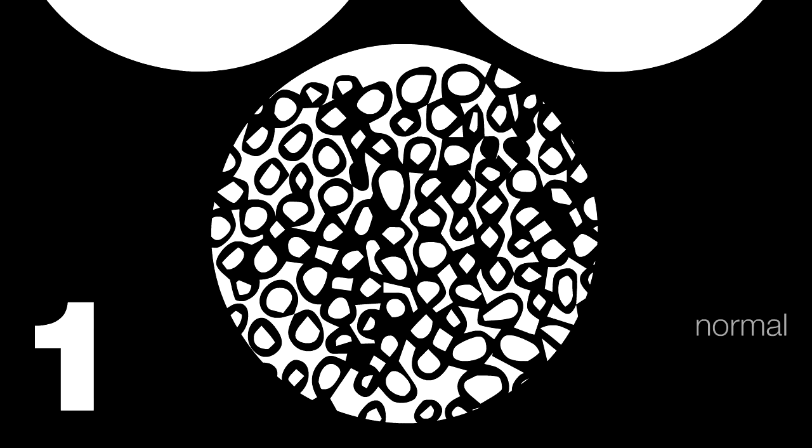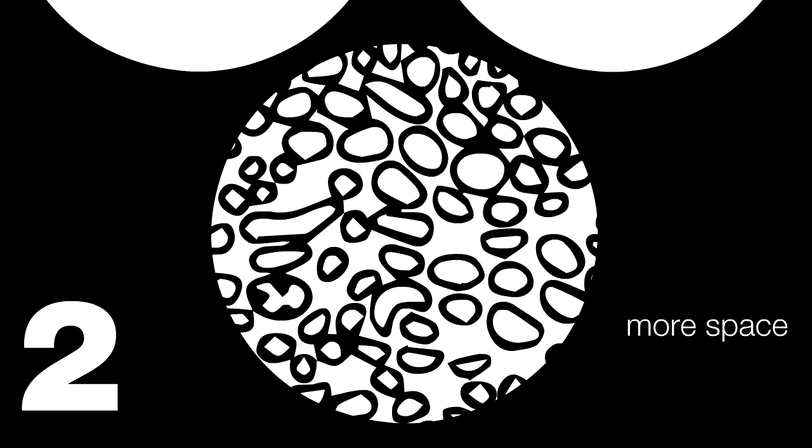A Gleason 1 looks pretty much like the normal prostate glands and represents a very slow growing, non-aggressive form of the cancer, almost a non-cancer. A 2 shows a little bit more space between the glands and a little irregularity, but still it's very slow growing.